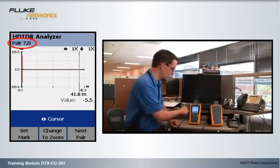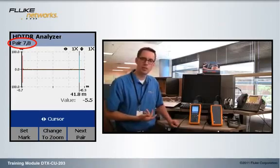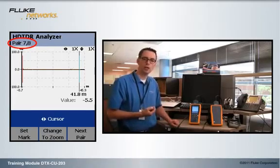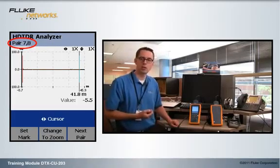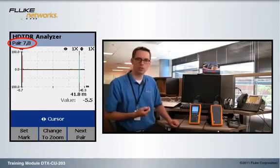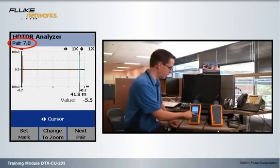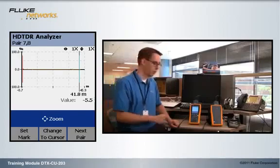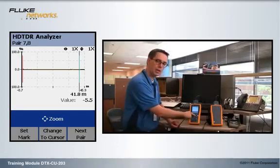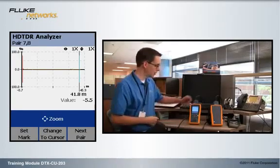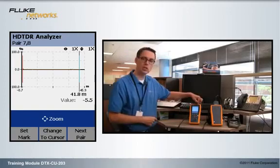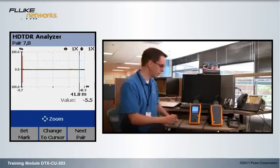Now it looks nice and smooth there, doesn't appear to be any issues going on. What you have to do with the HDTDR almost every time, there are exceptions, is press the F2 key and zoom in. We're going to do that by pressing the up arrow key and we're going to keep pressing the up arrow key until we see 64X appear in the top right hand corner.